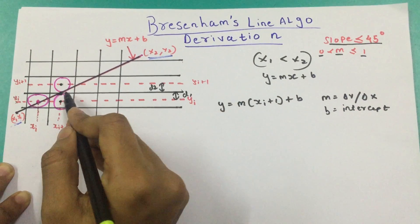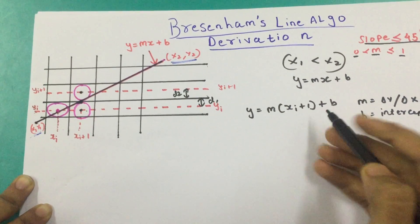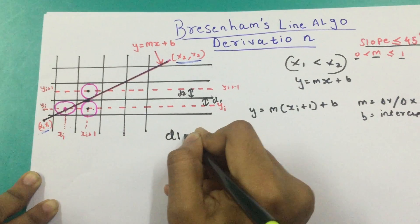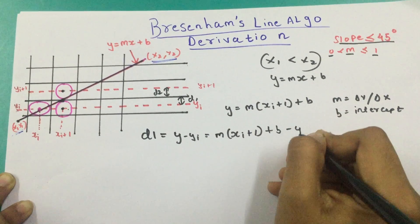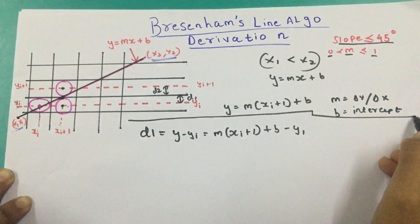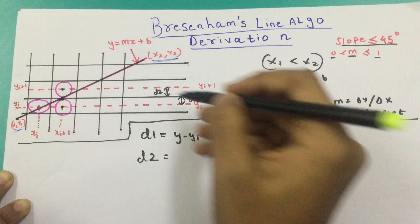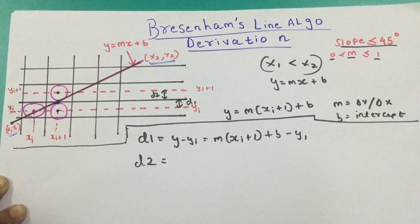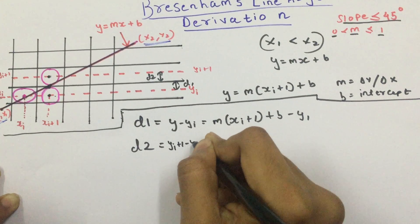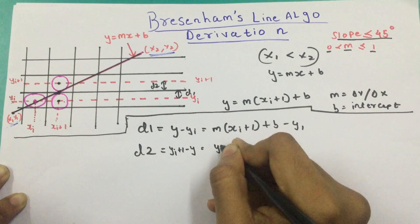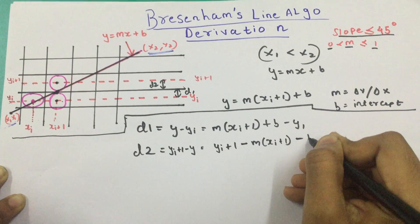So what is d1? d1 will be the distance of y from the pixel yi. Since y equals m(xi plus 1) plus b, d1 will be y minus yi, that is m times (xi plus 1) plus b minus yi. Now let's define d2. d2 is also a positive quantity, so it's going to be yi plus 1 minus y — not the other way around, because y minus (yi plus 1) would give a negative quantity. So d2 equals (yi plus 1) minus m(xi plus 1) minus b.